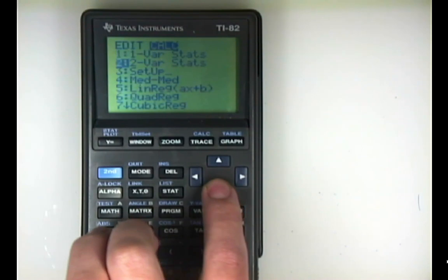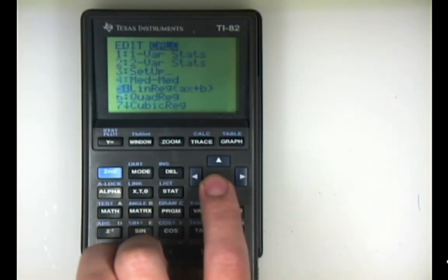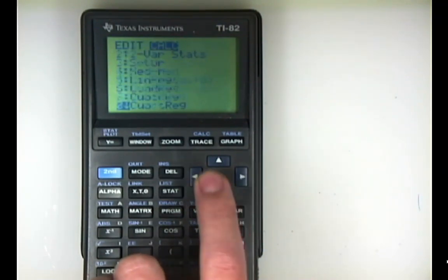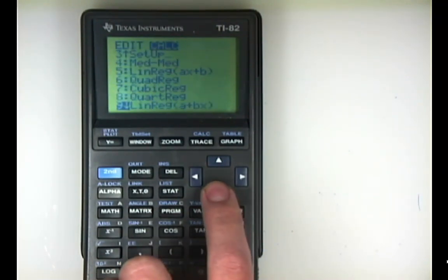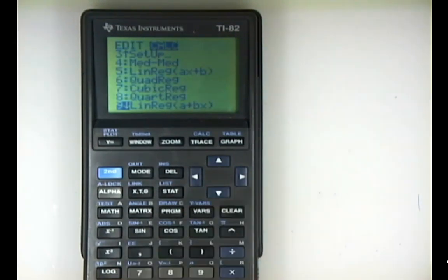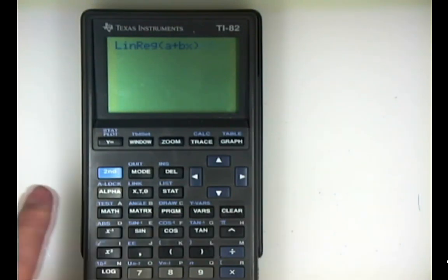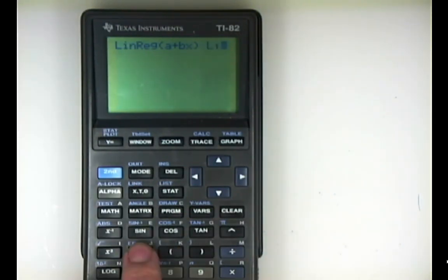You would want to go down to LinReg. If you're using a book with ax plus b equation model, you would pick that. What we commonly use though is the more traditional model, LinReg a plus bx. I'm going to select that. It's waiting for me, prompting where are my lists. My lists are list one comma list two.